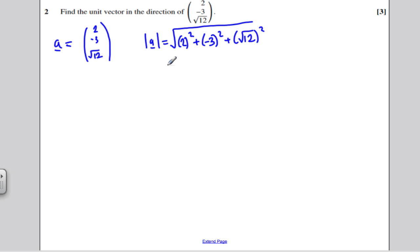OK, and if I work that out, 2 squared is 4, so it's going to be the square root of 4 plus 9 plus 12, and that's going to be the square root of 25, which is simply 5. OK, so the magnitude of this vector is equal to 5.